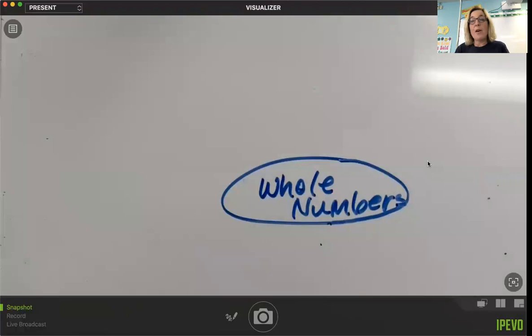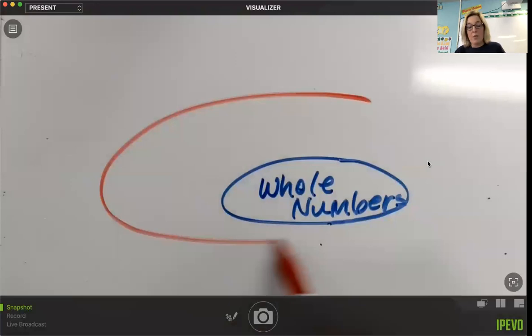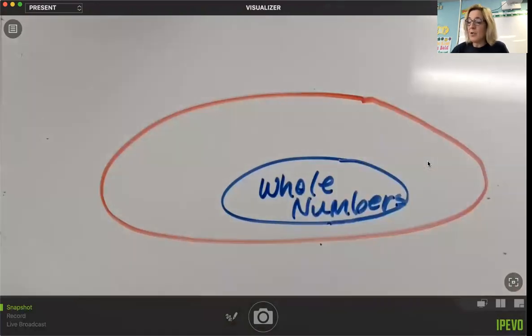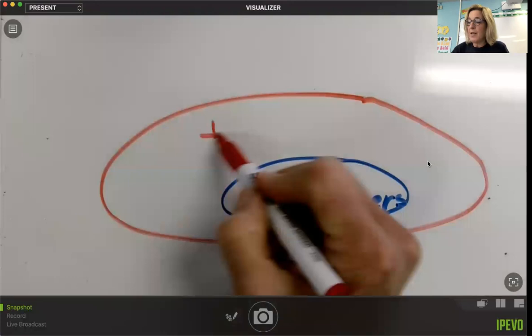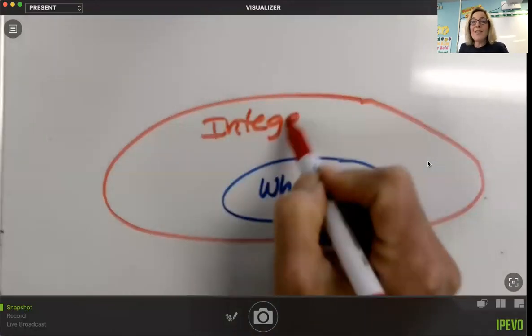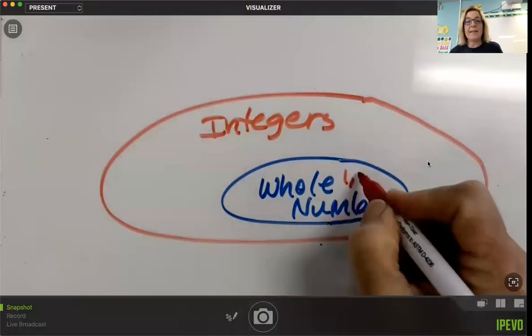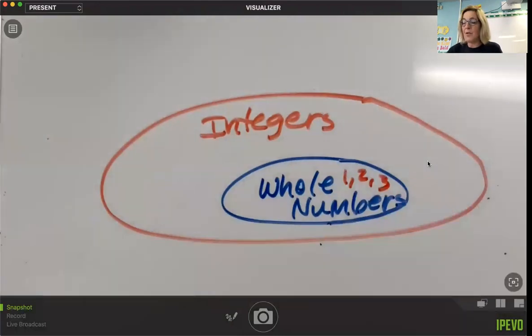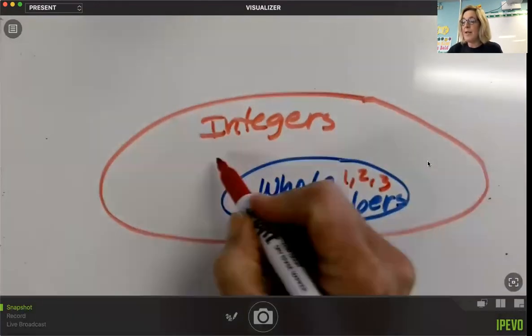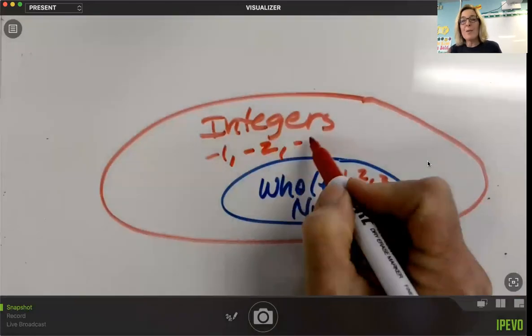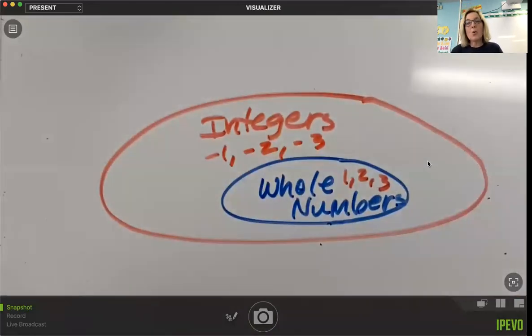Now, whole numbers are part of a larger group of numbers. So we'll draw a larger ring around. And these are called integers. We've talked about integers. The definition of an integer is any whole number and its opposite. So if whole numbers are one, two, three, the opposites of those numbers would be negative one, negative two, and negative three. But still, we're not dealing with any parts. These are still whole quantities, and also their opposites.